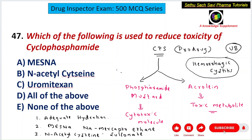Both mesna and N-acetylcysteine reduce cyclophosphamide toxicity. Uromitexan is simply the brand name of mesna. So the answer is definitely D — all of the above.